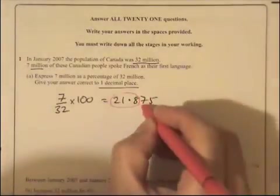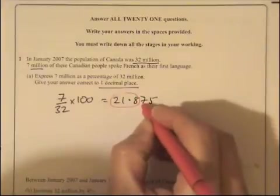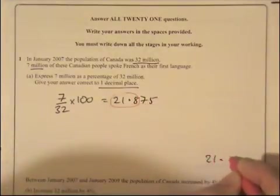But I look at the next figure to see if I keep it as that or go up. It's a 7. More than 5, I have to go up to 21.9.